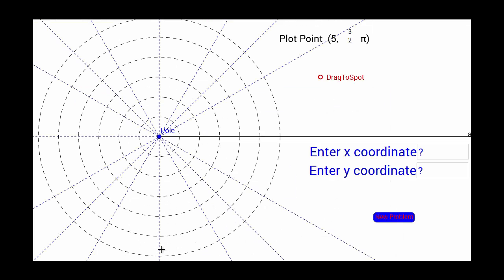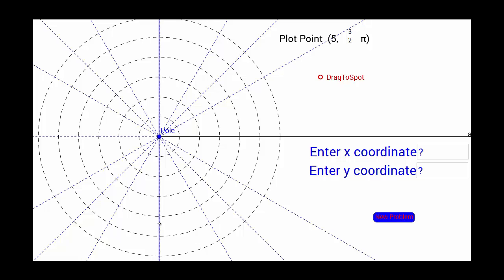Let's look at this problem. It asks us to plot the point (5, 3π/2). First we want to plot our theta, so theta is 3π/2. 2π/2 is pi, so we have to go one more half, down to here. Then we need to go a radius of 5, so that's where our point is.